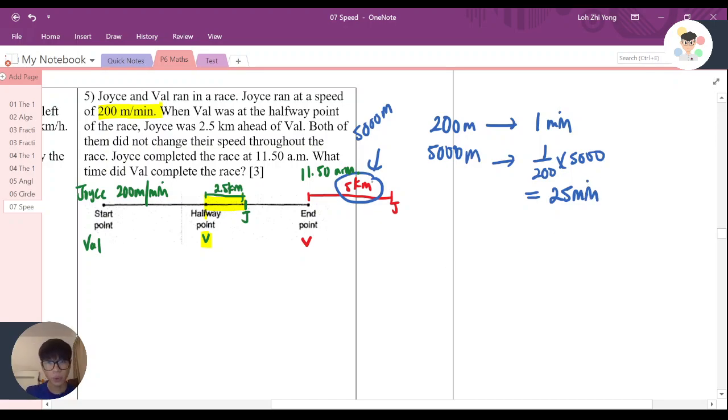25 minutes means that when he travels up to here, when Joyce runs until another extra 5 km here, then Valerie will be here. And the time when Joyce is here will be the same as Valerie here.